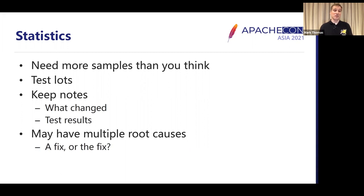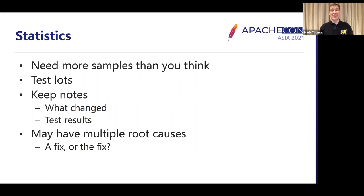What you're looking for is: is there a statistical difference between the tests before and the tests afterwards? Or in other words, did the change you make actually make a difference? To get a reasonable degree of statistical certainty around that, follow this rough rule of thumb — I'm an engineer, not a mathematician. Broadly, you need to have at least 20 tests, at least five of them pass and at least five of them fail. If you don't meet any one of those, you need to do more tests until you achieve all three.